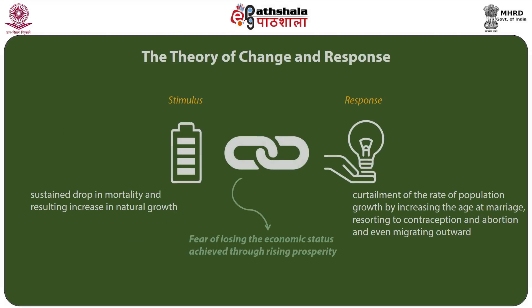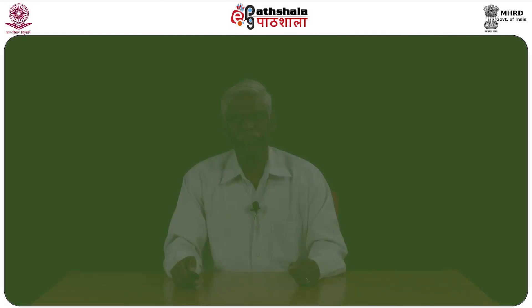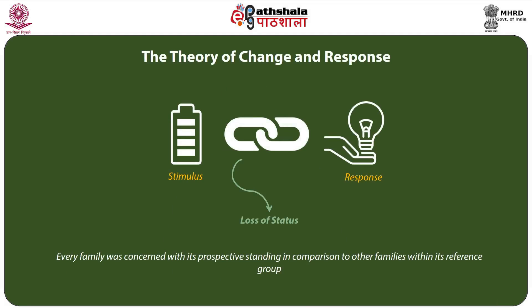The connecting link between the stimulus — a sustained drop in mortality and the resulting increase in natural growth — and the response — the curtailment of population growth rate through increased age at marriage, contraception, abortion, and outward migration — was the fear of losing the economic status achieved through rising prosperity. In North West Europe and Japan, the motivational linkage between change and response was not the fear of poverty but loss of status, as every family was concerned with its standing relative to others within its reference group.